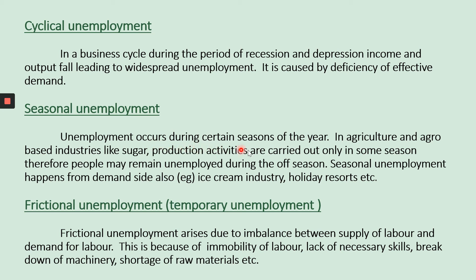Agro-based industries are industries that depend on agriculture for their raw materials. For example, sugar industry is an agro-based industry because its raw material is sugarcane. Production activities are carried out only in some seasons, so people may remain unemployed during the off-season when there is no sugarcane cultivation.